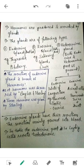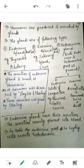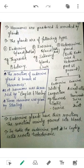Glands are of basically three types. Number one is the endocrine gland, which is ductless. Number two is the exocrine gland, which has a duct. Number three is the heterocrine gland, which has both an endocrine part and an exocrine part. We will discuss heterocrine glands in detail later. First, let us discuss the endocrine gland.